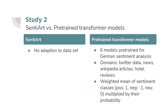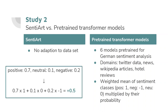We converted each label into a number: positive becoming plus one, neutral zero, and negative minus one. Then we multiplied each number by the probability for the corresponding class and summed up these values. For example, a sentence labeled with a probability of 0.7 for positive, 0.1 for neutral and 0.2 for negative would turn into a sentiment score of plus 0.5. In the next step, we compared these scores to the AAP scores obtained with SentiArt.